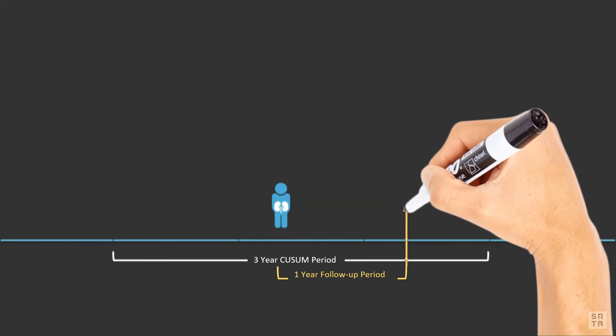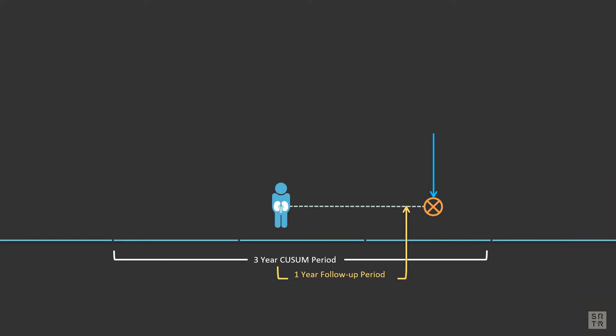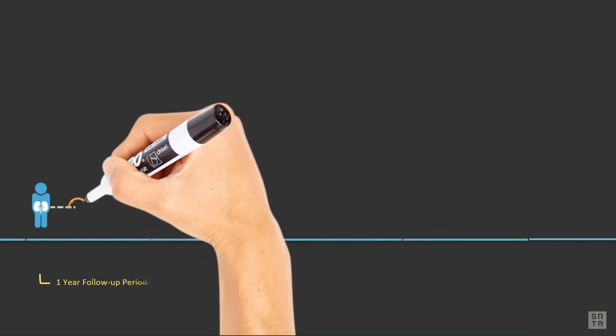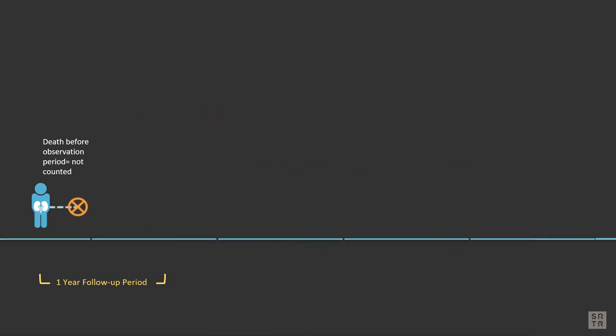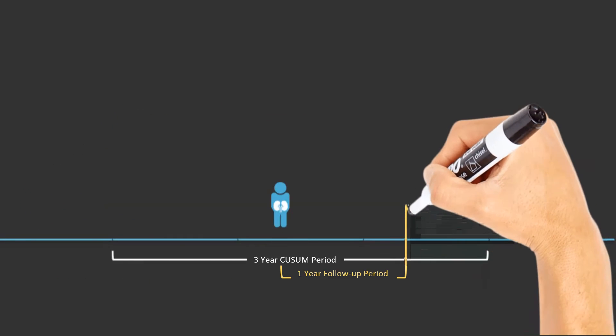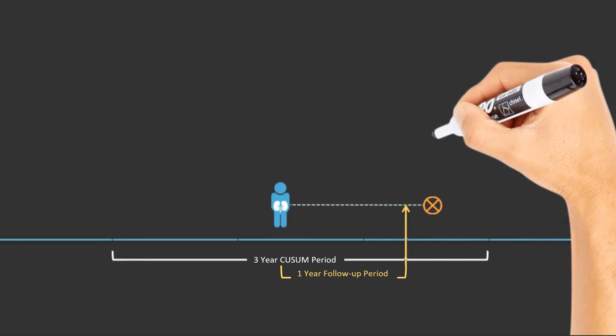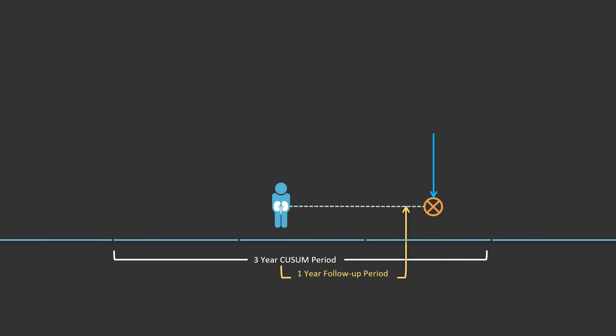Transplant recipients are monitored only during the first year post-transplant. Any events — that is, deaths or failures — that may occur beyond day 365 post-transplant do not affect the Q-sum chart. Events before the represented period began are excluded from the chart. Recipients that experience graft failure or death after their first follow-up year are removed.